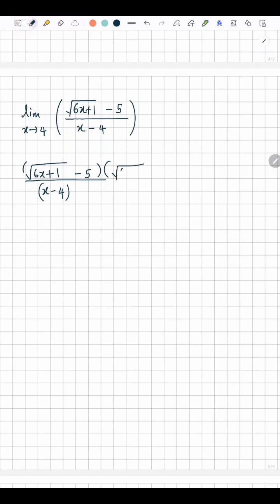So this is the conjugate. You multiply both the numerator and denominator, and now you can see the numerator is going to be 6x plus 1 minus 25, right? So that's 6x minus 24.